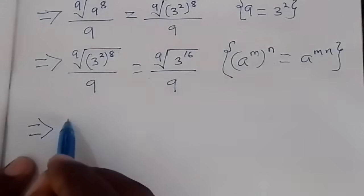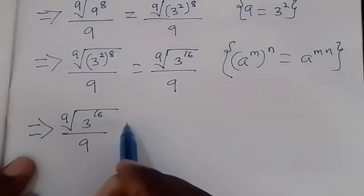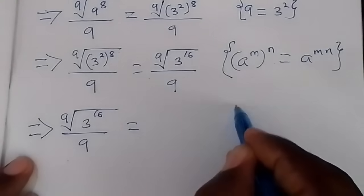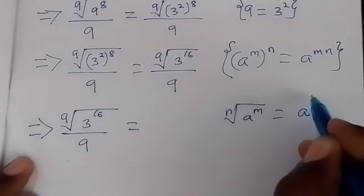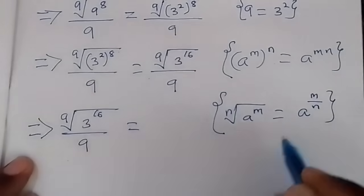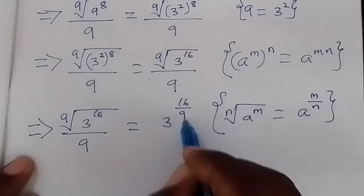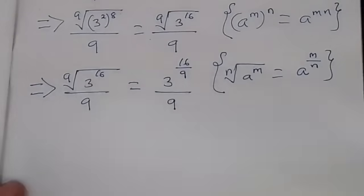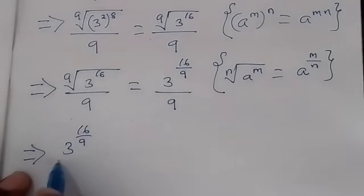This becomes the 9th root of 3 raised to power 16 over 9. Applying the rule that the nth root of a raised to power m is the same as a raised to power m over n, this becomes 3 raised to power 16 over 9, all over 9.